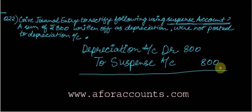Just to recap: suspense account is used when you close your trial balance and it doesn't match. You start preparing your final accounts so they don't get delayed, and as you get to know what the errors were, you keep reverting the amounts placed in the suspense account. This was all about the 22nd question.